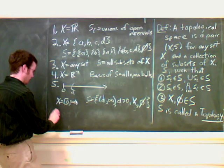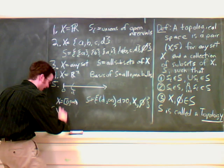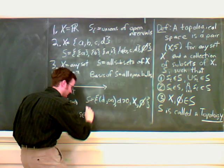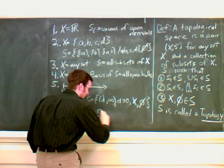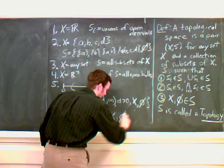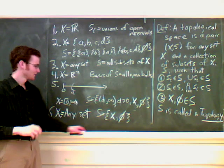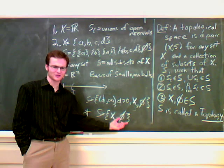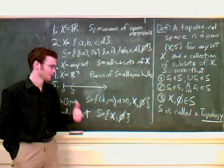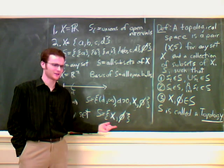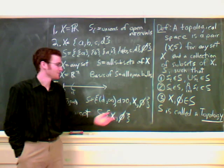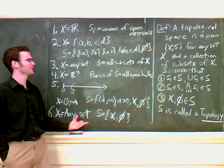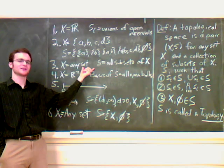The last one we have is, we take X again to be any set, and we declare S to be everything and the empty set. Let's make sure that this is a topology. Well, if we take unions of everything or nothings, you're either going to get everything or nothing, so we're good. If you take their intersections, you again will get everything or nothing, so you're good. And it clearly follows the third property. So S is a topology.